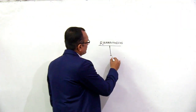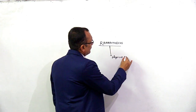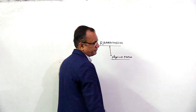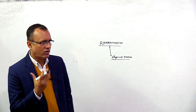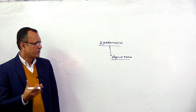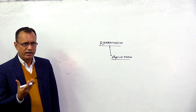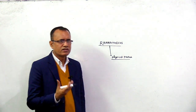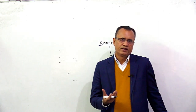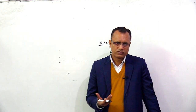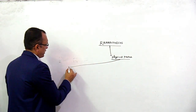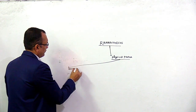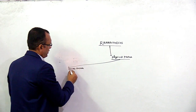Now, physical features. We found fossils of Ramapithecus mainly related to their jaw and teeth. Most of their physical features which we are going to write are related to their jaw and teeth. First important thing is that the dental arcade is V-shaped.